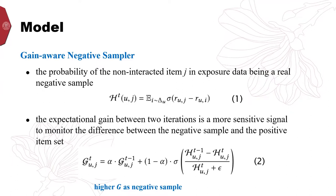Moreover, compared with the expectation of the score difference between the positive and negative samples in equation 1, the expectational gain between two iterations is a more sensible signal to monitor the difference between the negative sample and the positive item set. Correspondingly, we develop a gain-aware function to calculate the probability of item j being a real negative sample as equation 2.